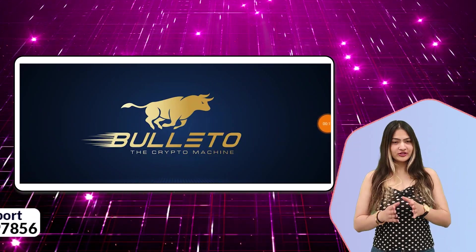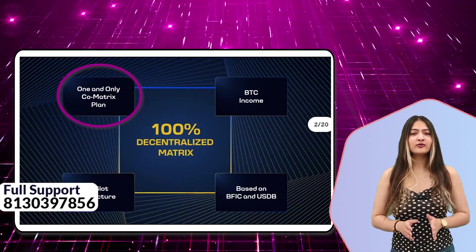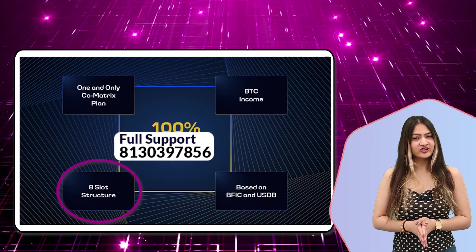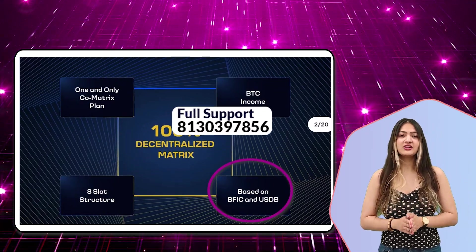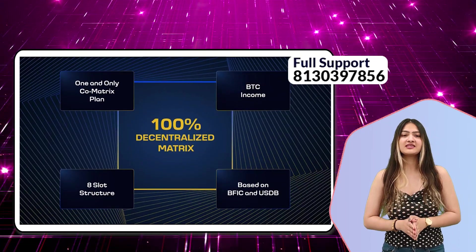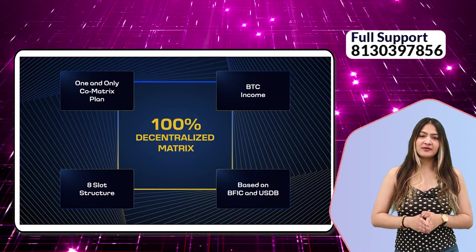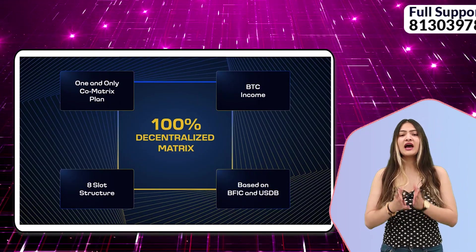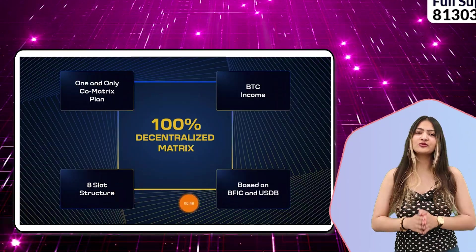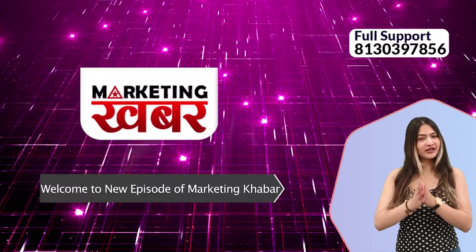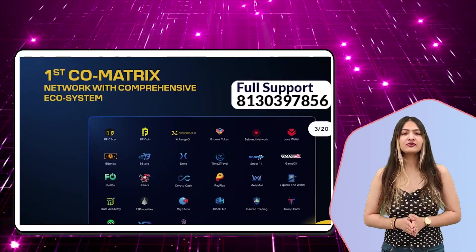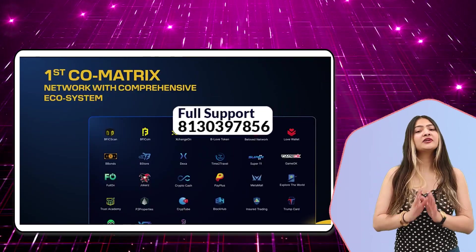Hi guys, today we are going to talk about the Bullittal plan. What is the Bullittal plan? It is a one and only co-matrix plan which you can earn in BTC. This is an 8-slot structure which you can join if you have BFIC or USDB. You can join B-bond through which you have to purchase BFIC. You can see the first co-matrix network with a comprehensive ecosystem. You can do unlimited earnings in this plan.